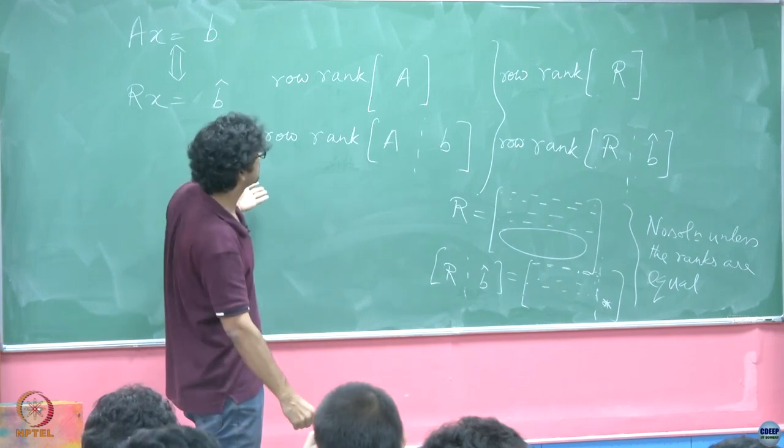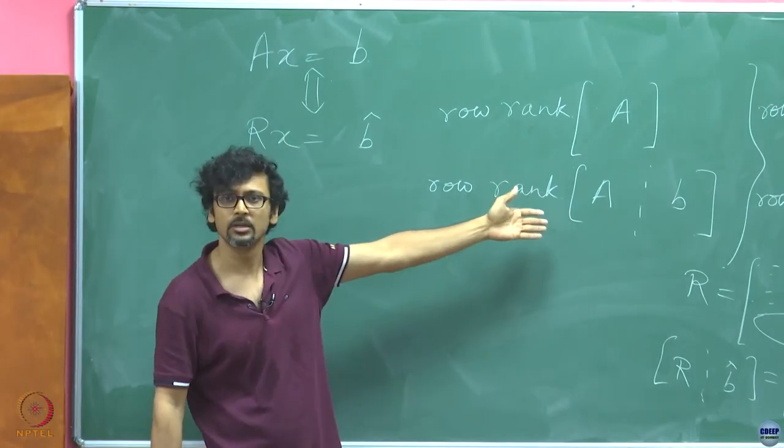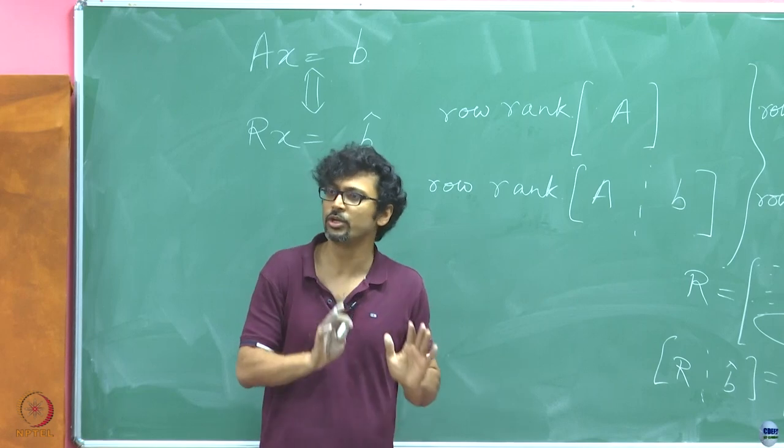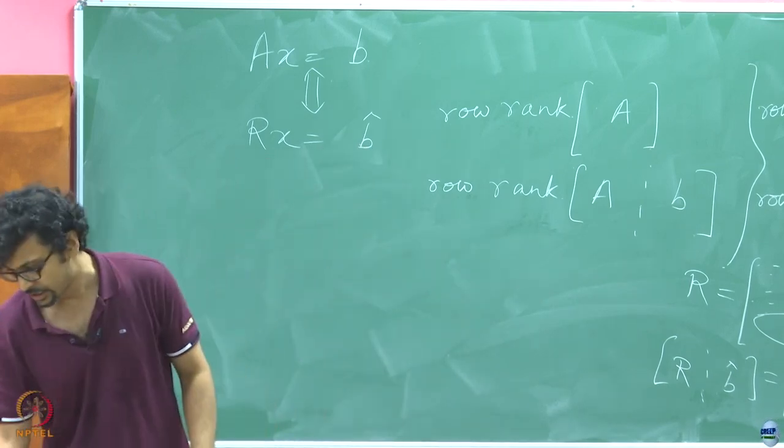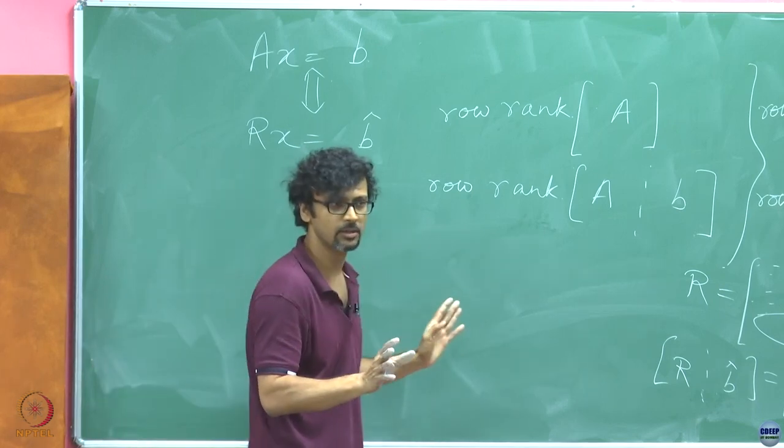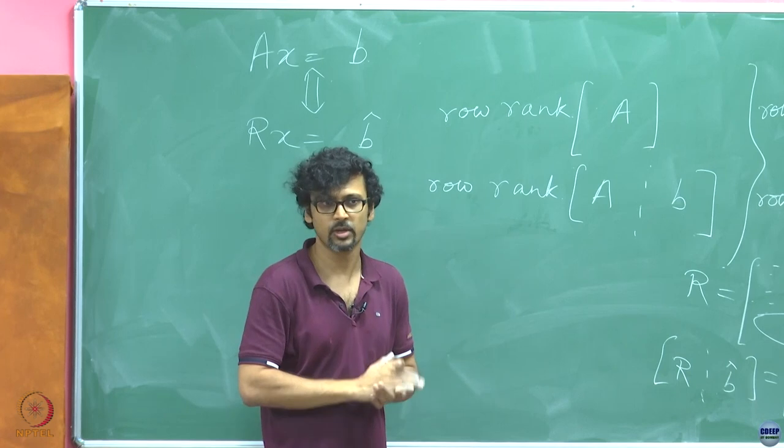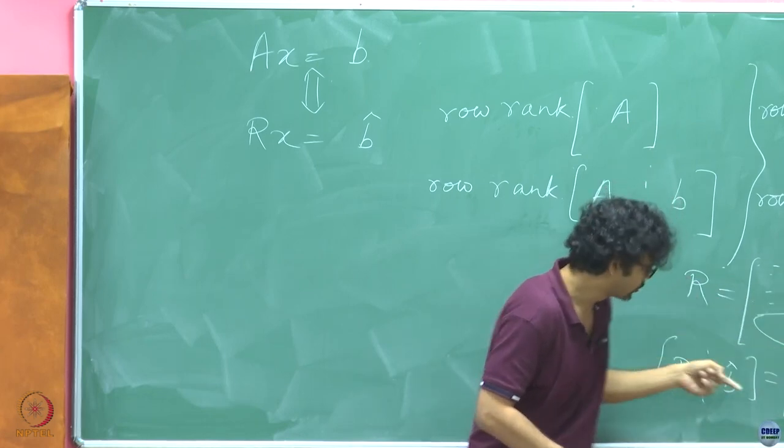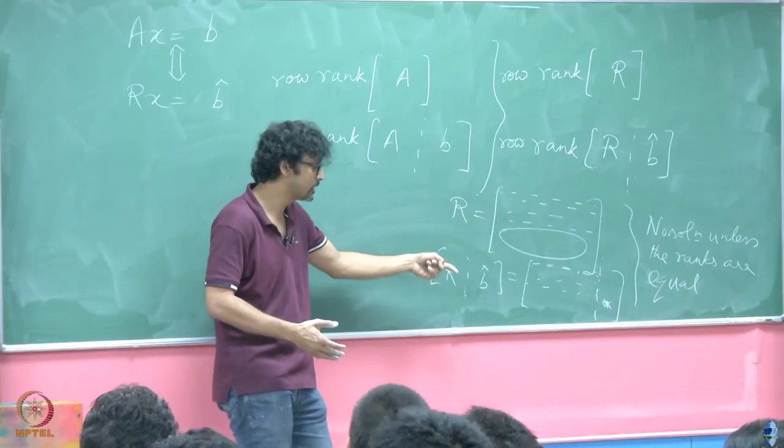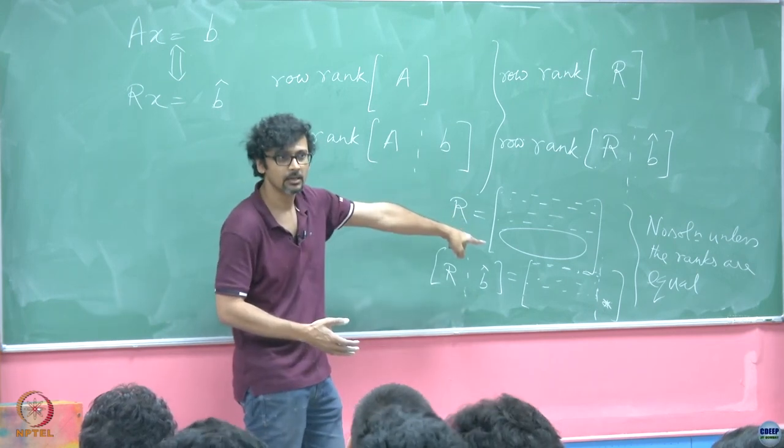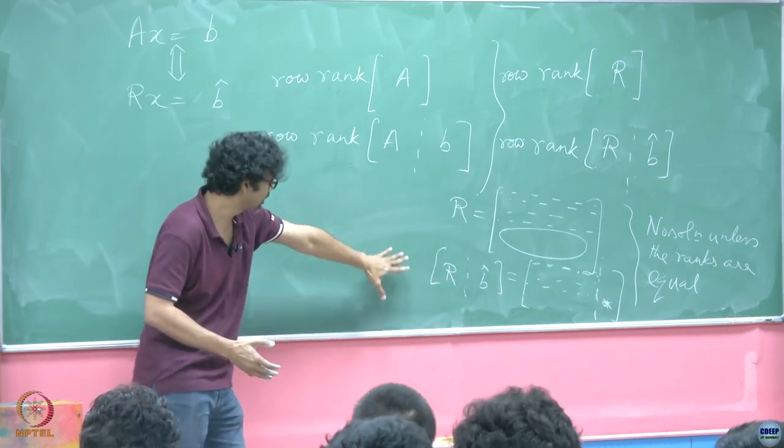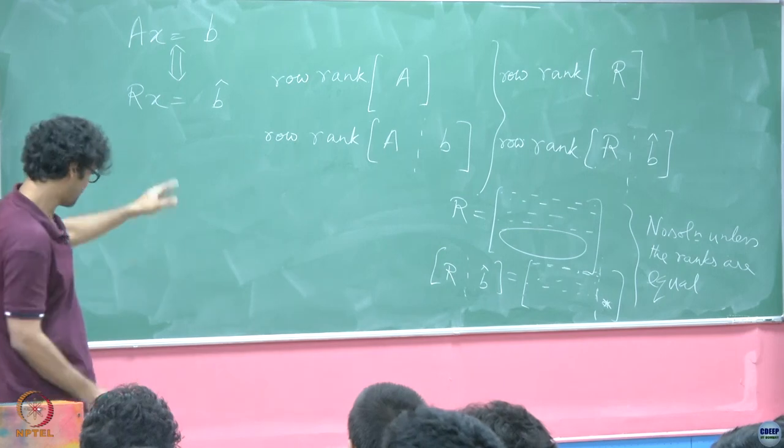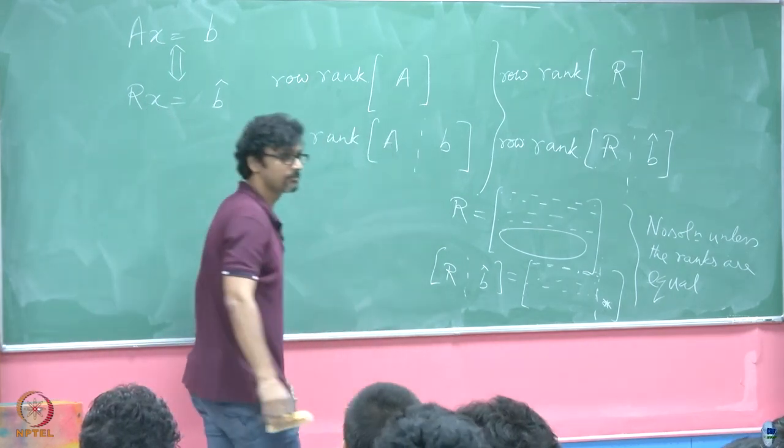What is more, you now notice this is not contingent upon having a square matrix A. Because everything we have done up until this point, we have not gone via the route of taking an inverse or a determinant. We have dealt with a general m cross n matrix. So this idea of checking for whether a solution exists or not through this test holds even for rectangular systems and now you know why.